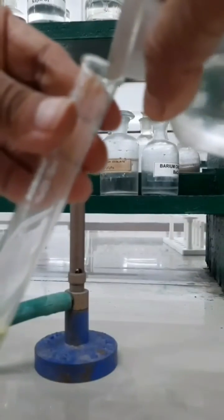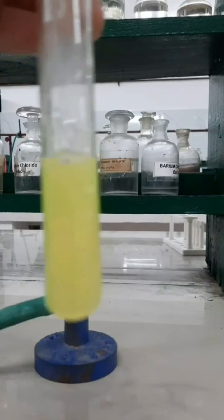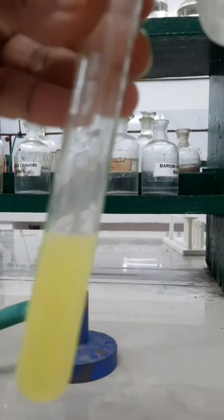After this, you have to add lead acetate solution into it. After adding lead acetate solution, a yellow precipitate of lead chromate will be obtained, and that will confirm the presence of chloride ion.